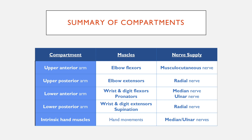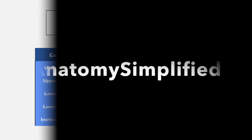Those five compartments are the upper anterior arm, the upper posterior, the lower anterior, the lower posterior, and the intrinsic muscles of the hand. I'll revisit this table again and again, and eventually you'll get a grasp of what the basics are.